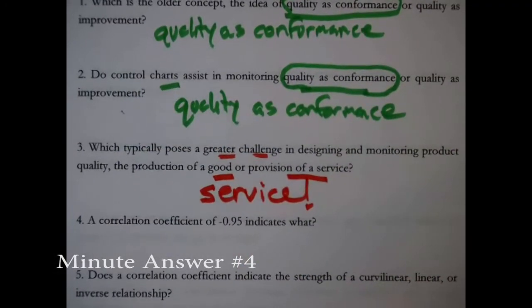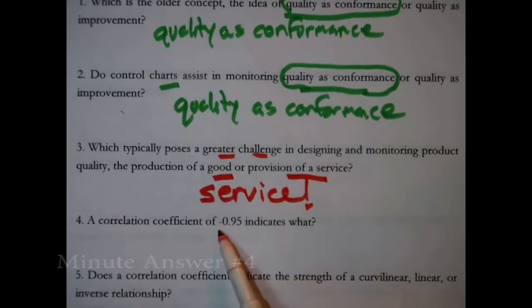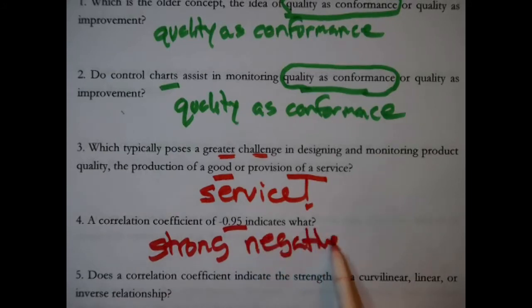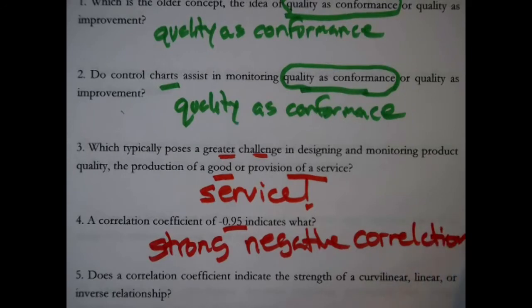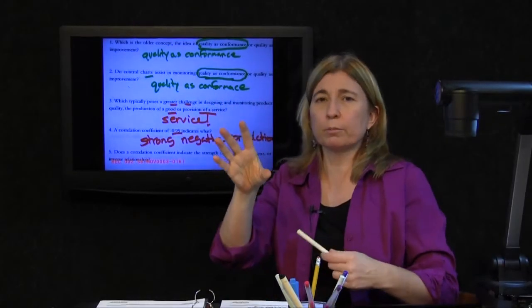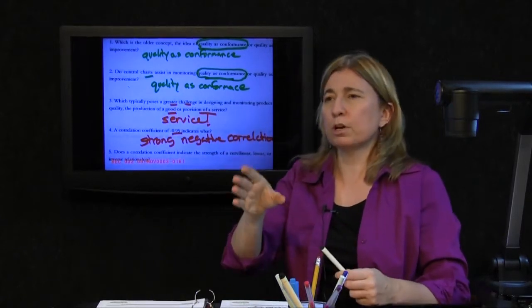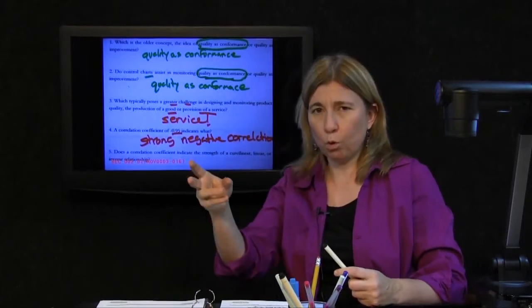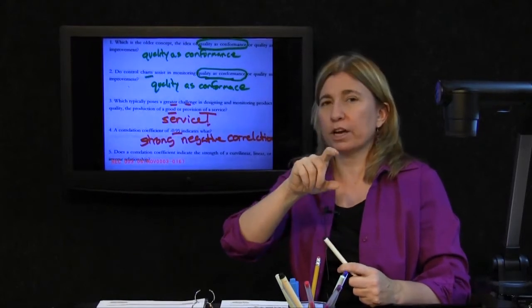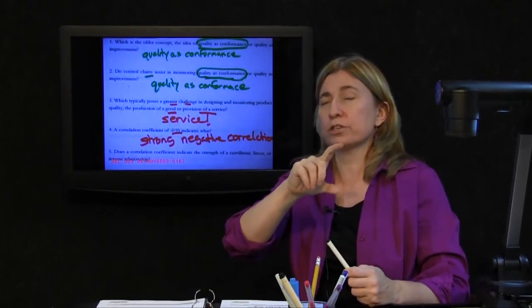A correlation coefficient of negative .95 indicates what? How would you interpret that? Strong negative correlation. The correlation coefficient, when you complete that big formula, your result should be some number between negative 1 and 1.